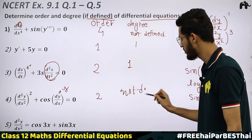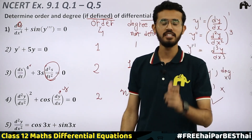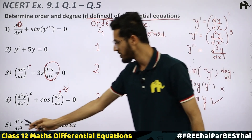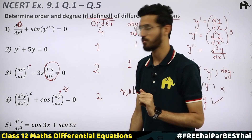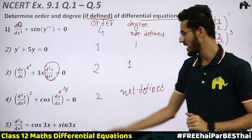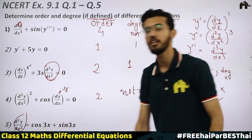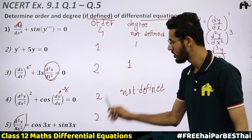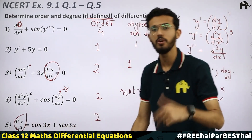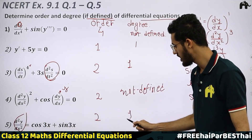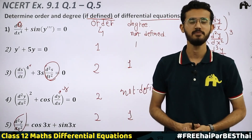We will write 'not defined' here. Now for d²y/dx² = cos(3x) + sin(3x): the highest order derivative is 2, so the order is 2. The power of that highest order derivative is 1, so the degree is also 1.